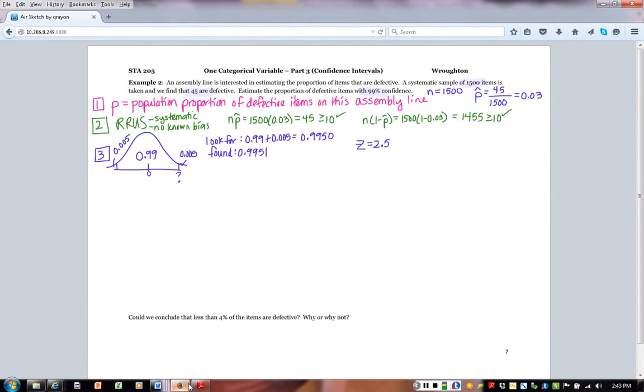Now that I have my z-score, I can plug those numbers into my formula. So we start with our p-hat, which is 0.03. We're going to subtract off our z times the square root of p-hat times one minus p-hat over n. And then we have the same thing on the other side except for a plus sign between them. So if you compare this to our formula here, this is just what we're doing.